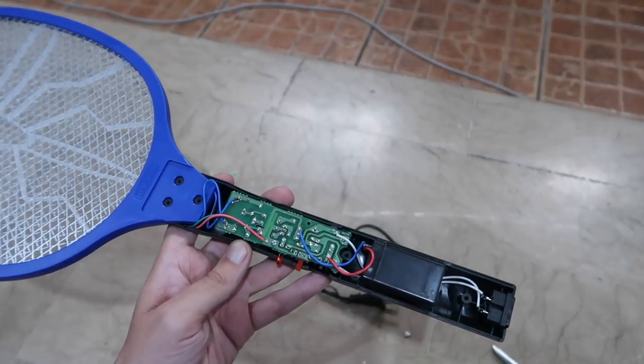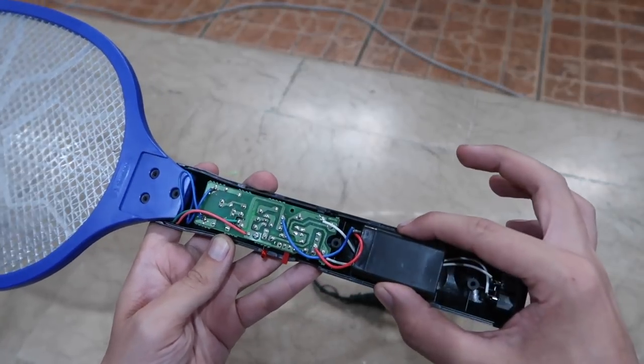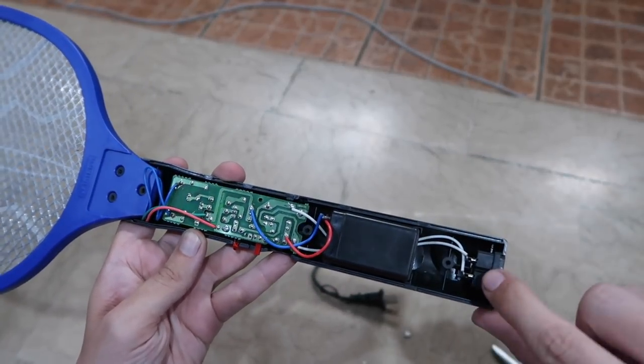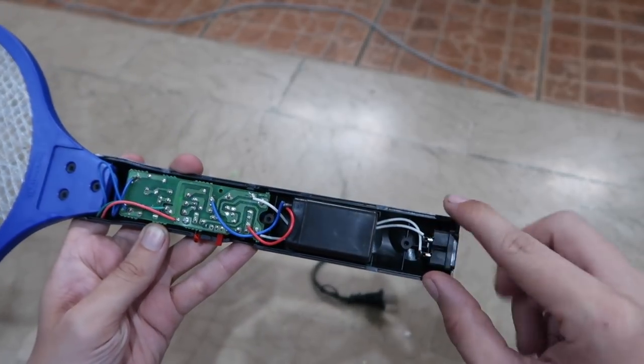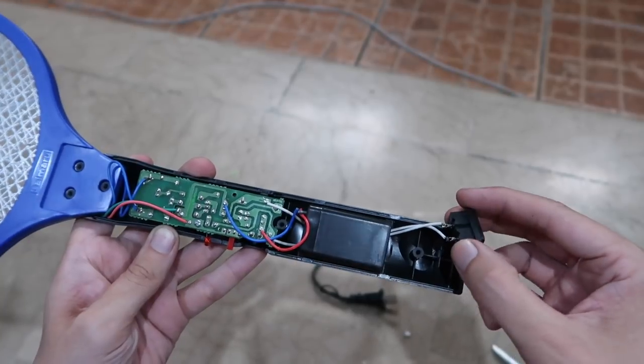So I removed the screws so the case can come open and here you can see the battery. First thing we're going to do is actually remove these two wires here. This is where the AC charger comes in. We won't be using that anymore so we will just break them off.